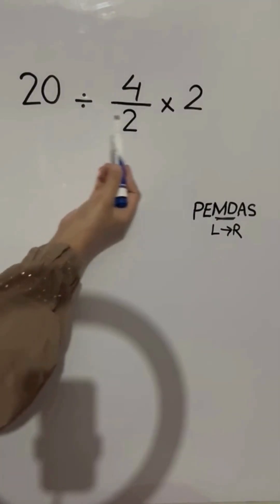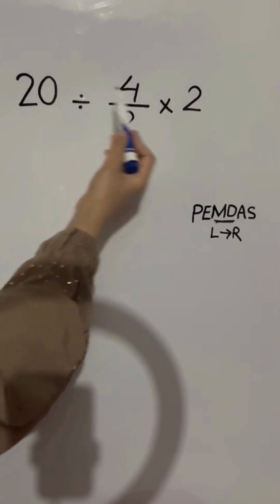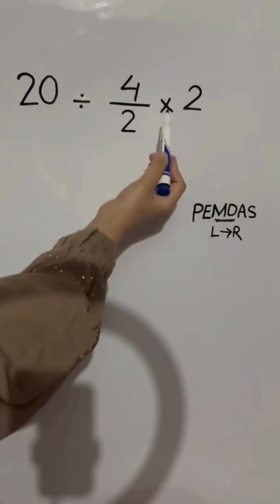In this expression, we have one division and one multiplication, so we have to do from left to right. First this division, then this multiplication.